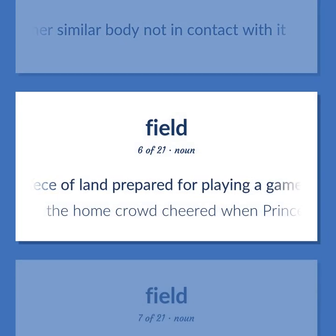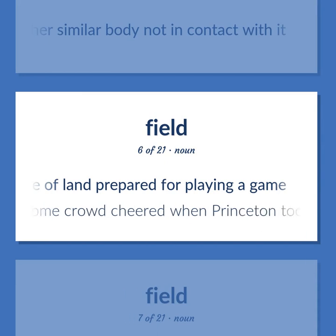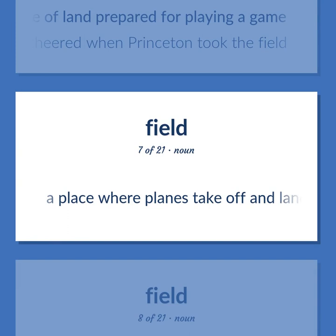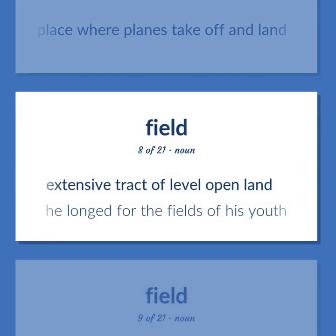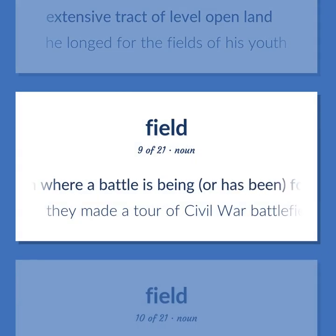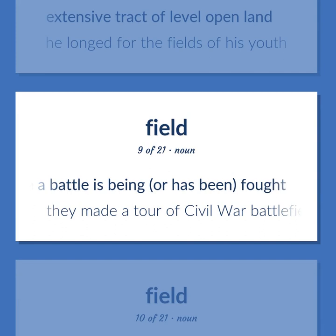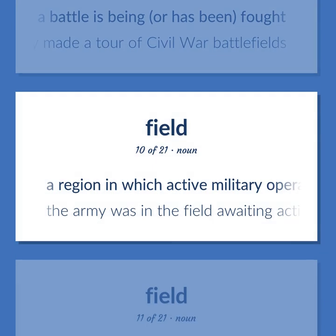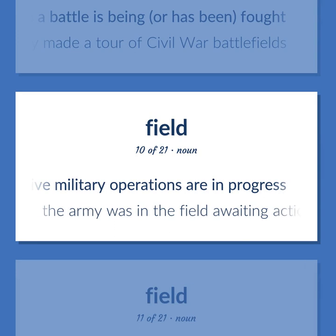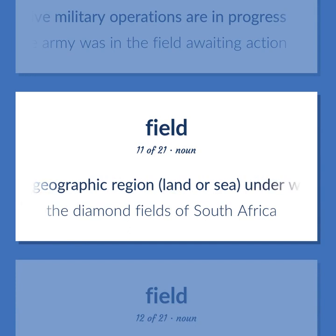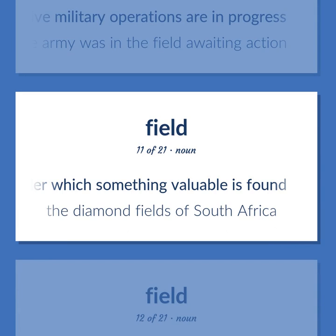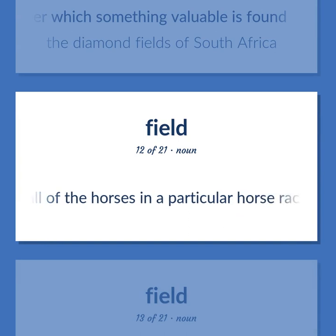A piece of land. The home crowd cheered when Princeton took the field. A place where planes take off and land. Extensive tract of level open land. He longed for the fields of his youth. A region where a battle is being, or has been, fought. They made a tour of Civil War battlefields. A region in which active military operations are in progress. The army was in the field awaiting action. A geographic region, land or sea, under which something valuable is found. The diamond fields of South Africa. All of the horses in a particular horse race.